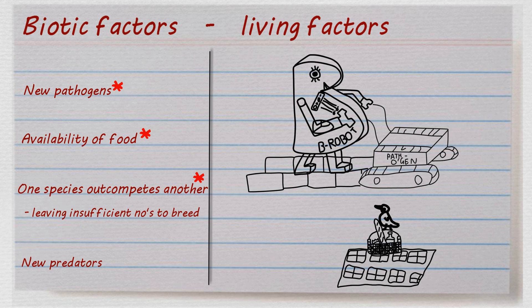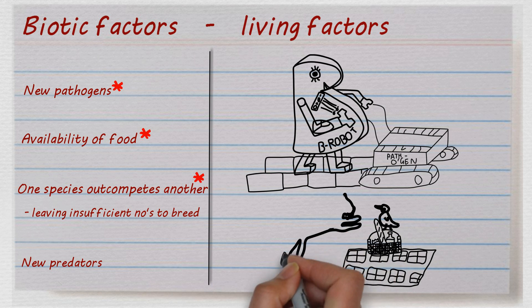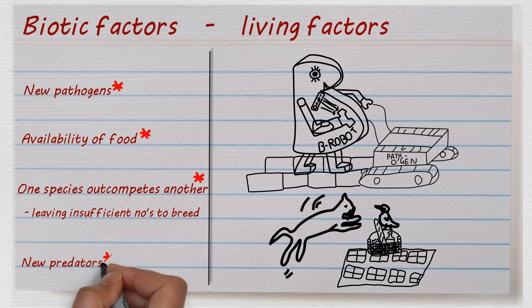Competition can lead to numbers of a species being too low to reproduce at a sufficient rate. But the B robot is pleased to note that at that exact moment, a cat leaps out and kills the bird — it's a new predator arriving on the scene. Not good for the bird, but cats don't eat robots.